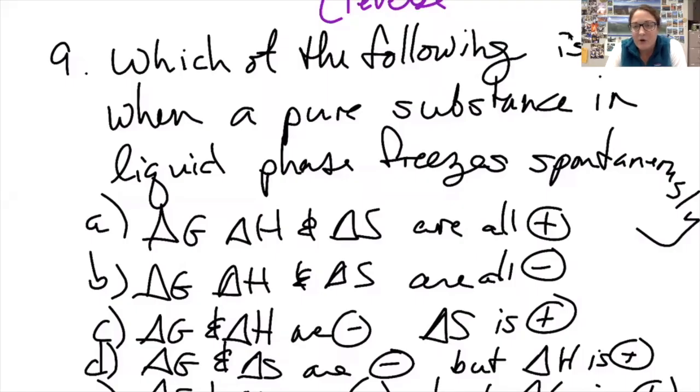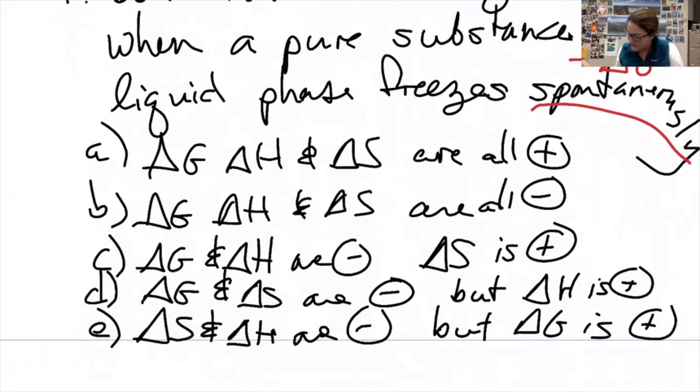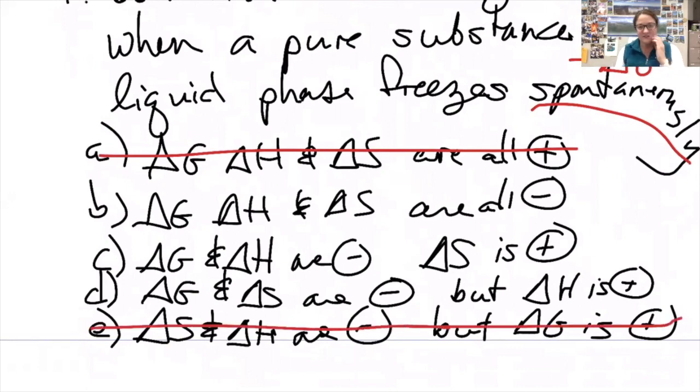Here's an example from a prep book that gets after this topic. Which of the following is true when a pure substance in liquid phase freezes spontaneously? The first thing I'm going to do is deal with the word spontaneously. If it's spontaneous, that means we have a negative delta G value. So I can rule out this one and this one because those have positive delta G values.